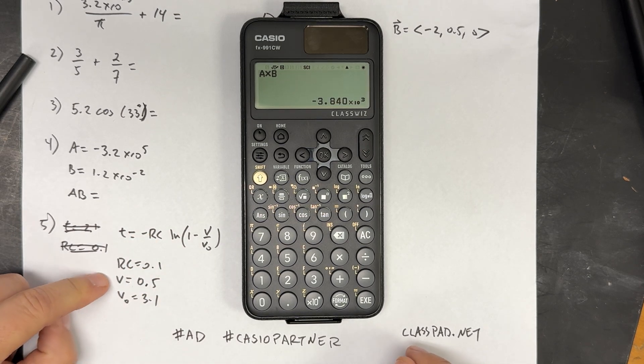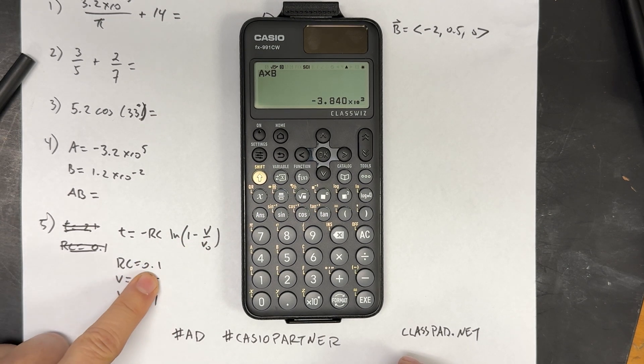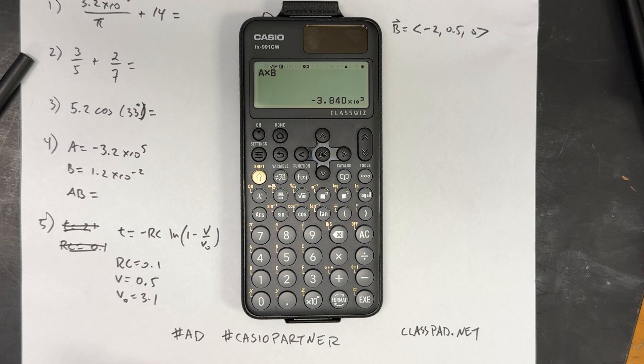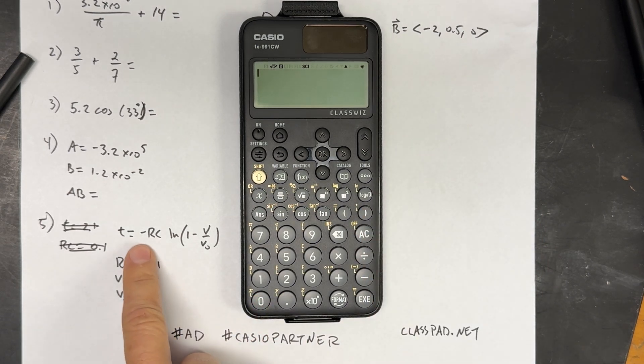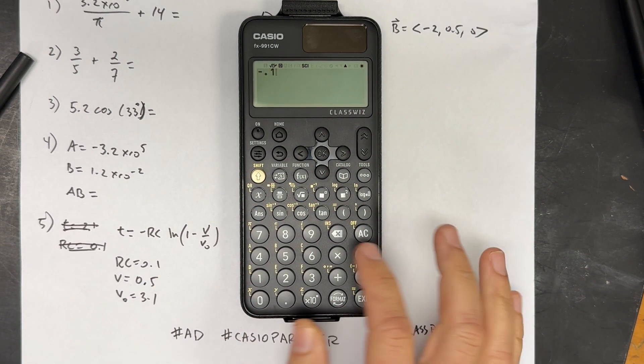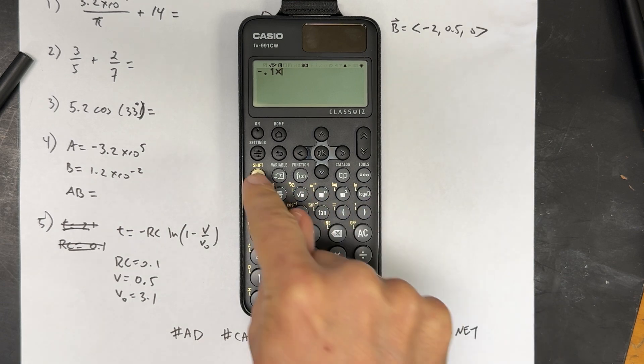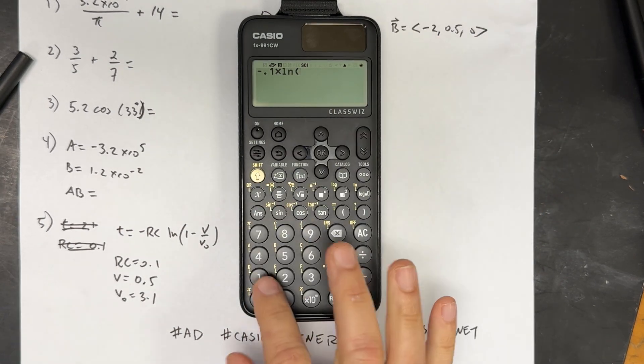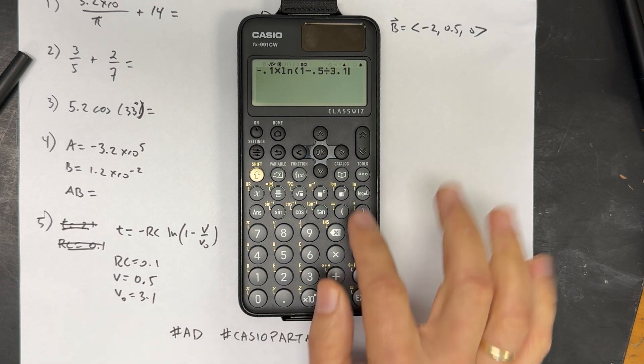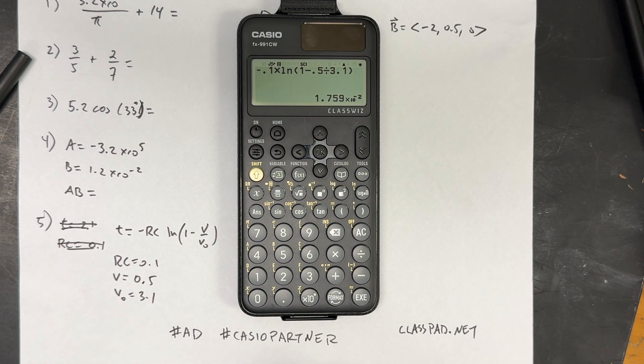Here is a natural log problem. Suppose I want to find the time: negative RC, natural log of 1 minus V over V0. And I said RC is 0.1, V is 0.5, V0 is 3.1. I've made up some numbers. Let's start right here. I'm going to say negative, and then 0.1 times. Now I'm going to do the natural log. The log button defaults to some any base, but I want natural log. We usually use natural log in physics. It puts a parenthesis there. 1 minus V 0.5 divided by 3.1. Now I can do close parentheses. And then that should be it. Execute. So the time is 1.759 times 10 to the negative 2.